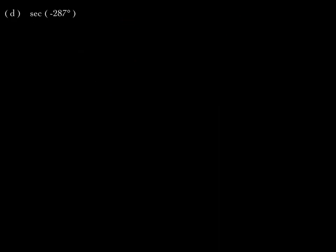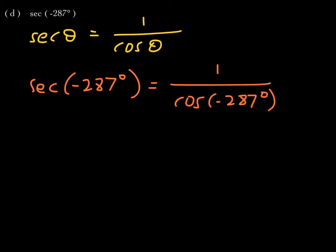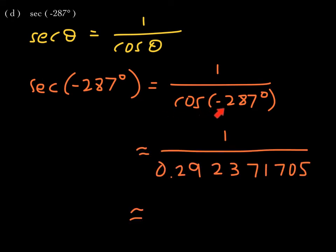Next: secant of negative 287 degrees. Secant — we don't have a button for it — but we can use a reciprocal identity. We know that secant of theta is equivalent to 1 over cosine of theta. Therefore, secant of negative 287 degrees is equivalent to 1 over cosine of negative 287 degrees. I'm going to enter the denominator first — cosine of negative 287 degrees — and then reciprocate my result. After reciprocating, my final answer is approximately 3.42030362. That's my approximate answer.